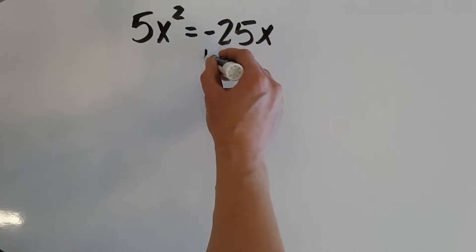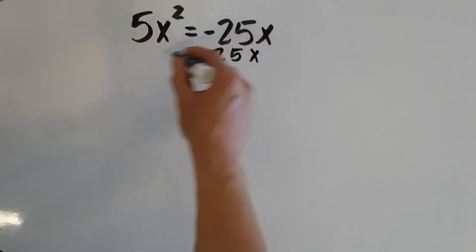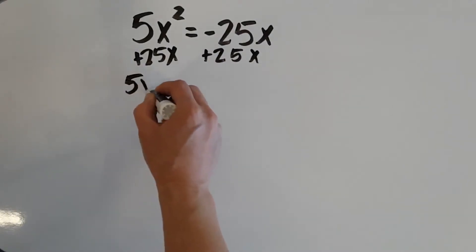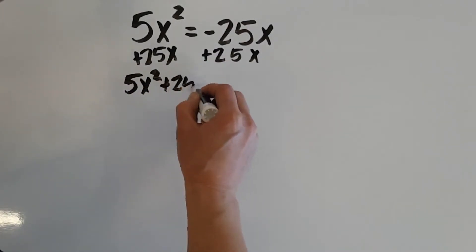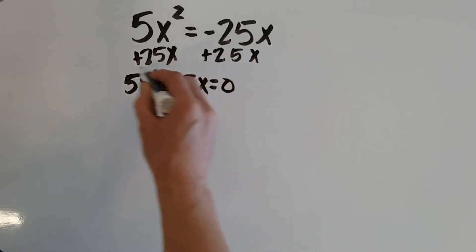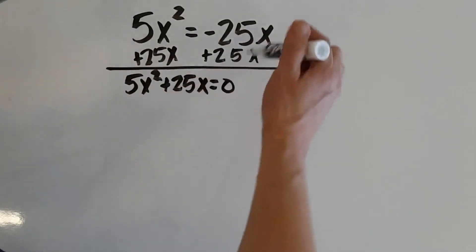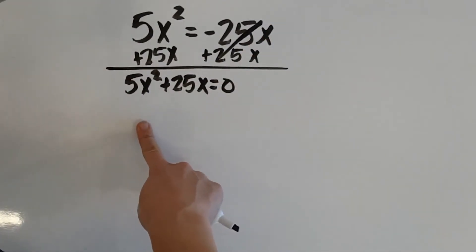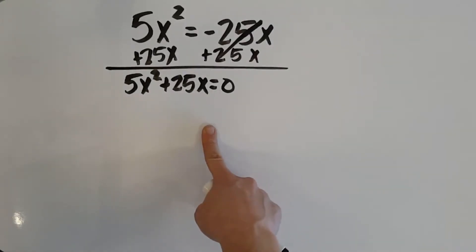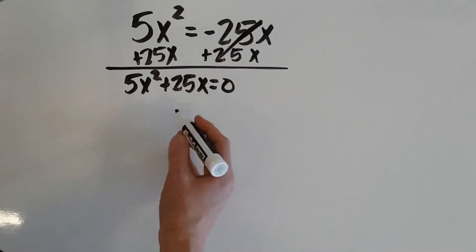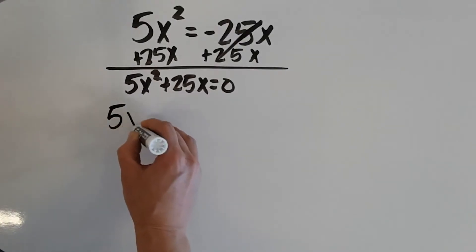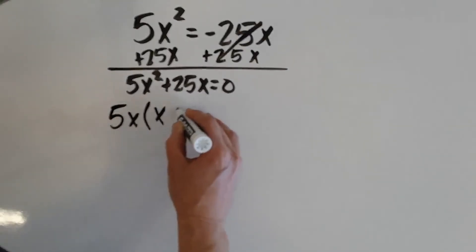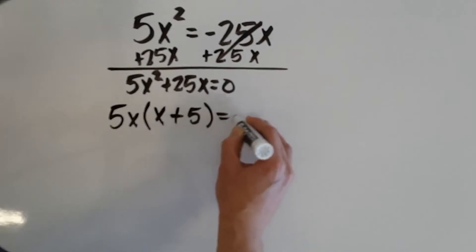And I'm going to add 25x to both sides to move everything over to the left. So, now we have 5x squared plus 25x equals 0. Step 2 says to factor. Well, when we factor, we always check for a GCF first, which in this case, there is a GCF of 5x. So, if I factor out 5x, I'm left with x plus 5 equals 0.